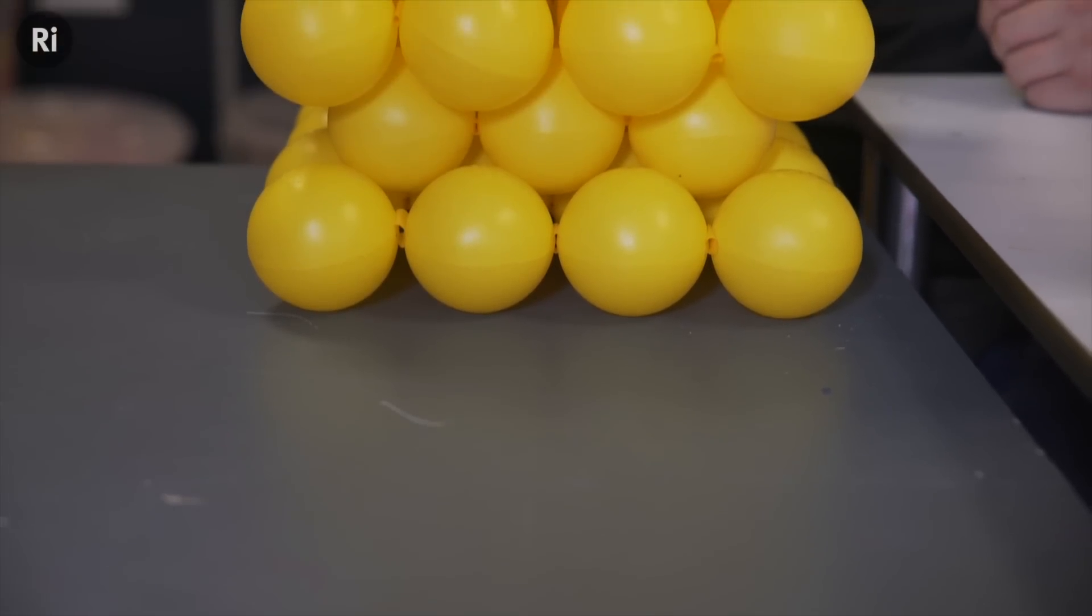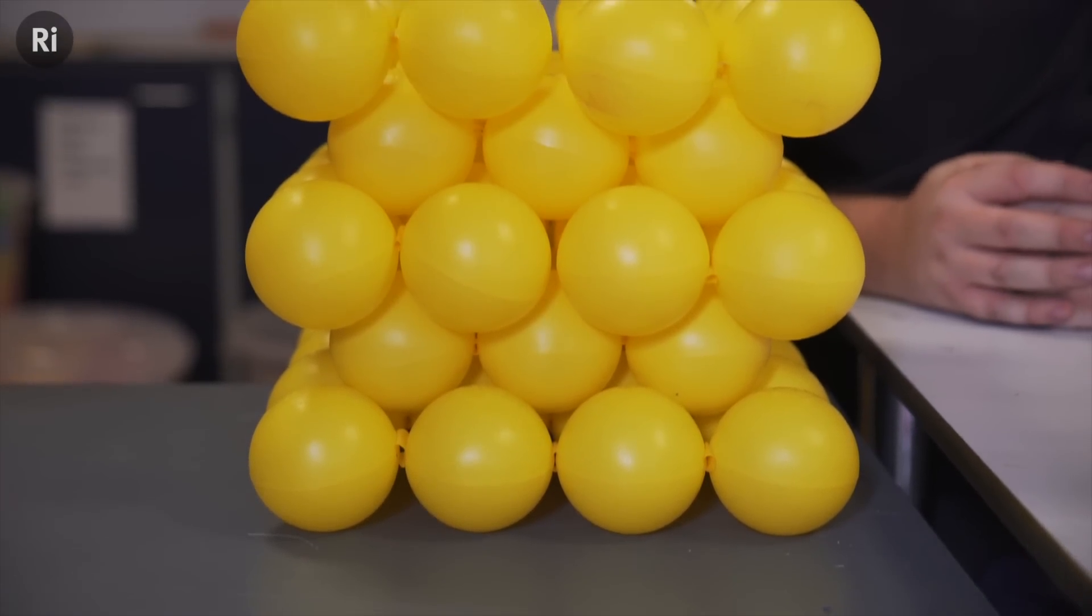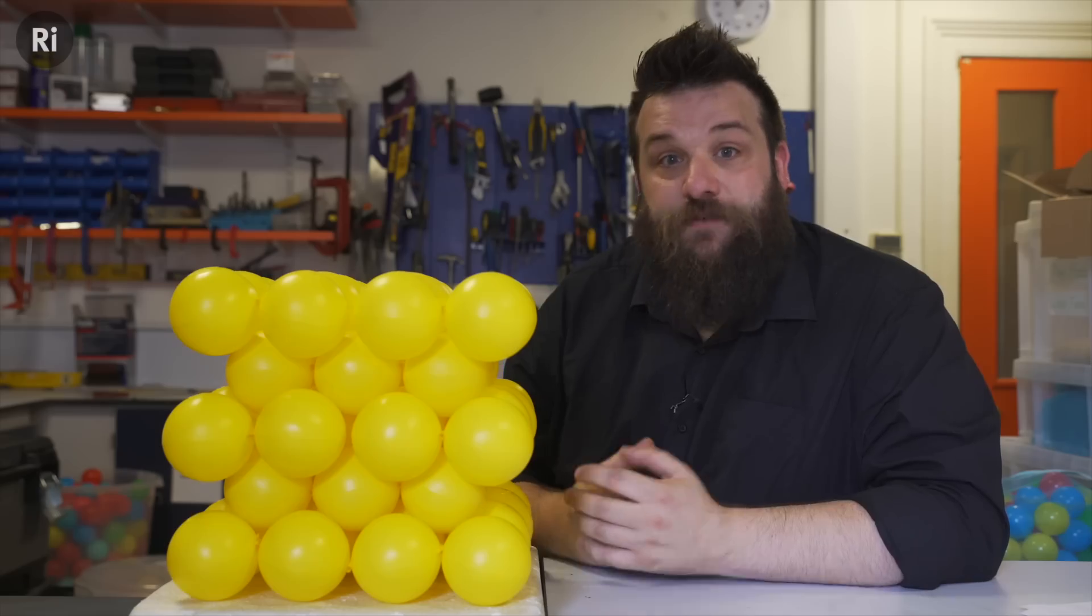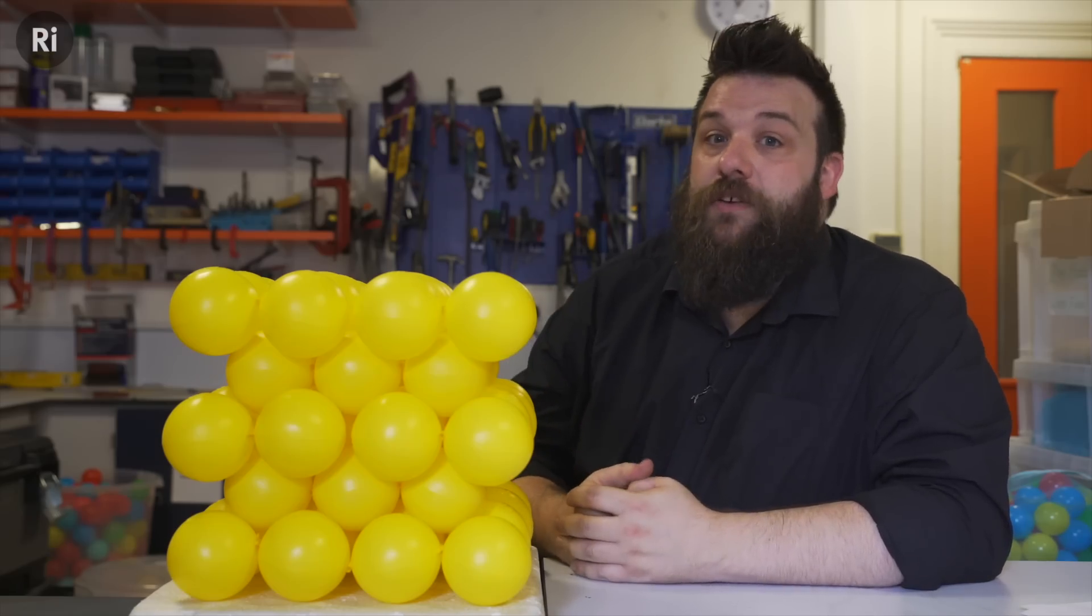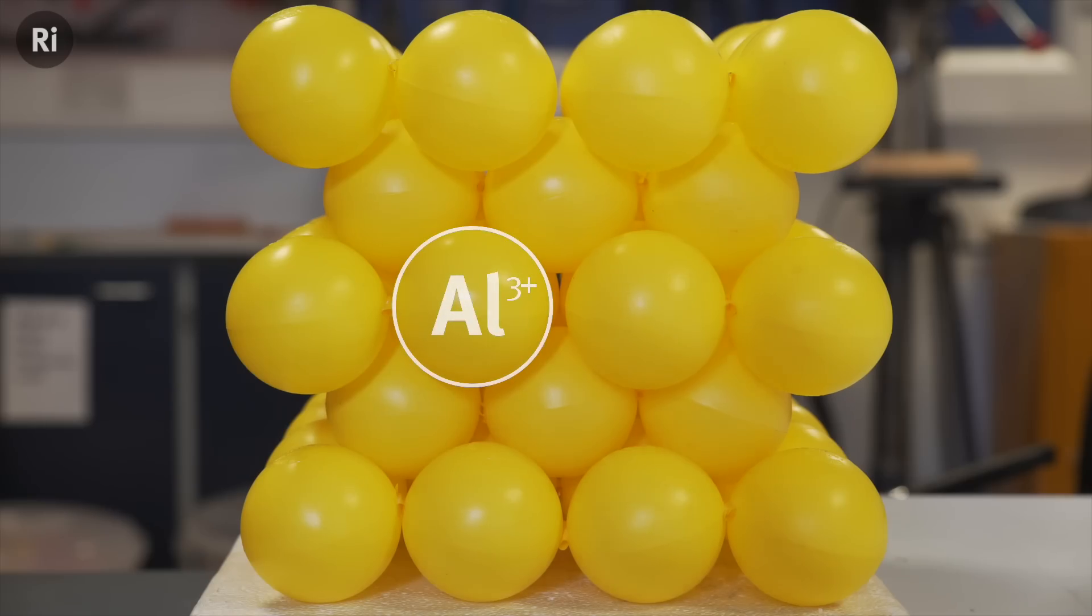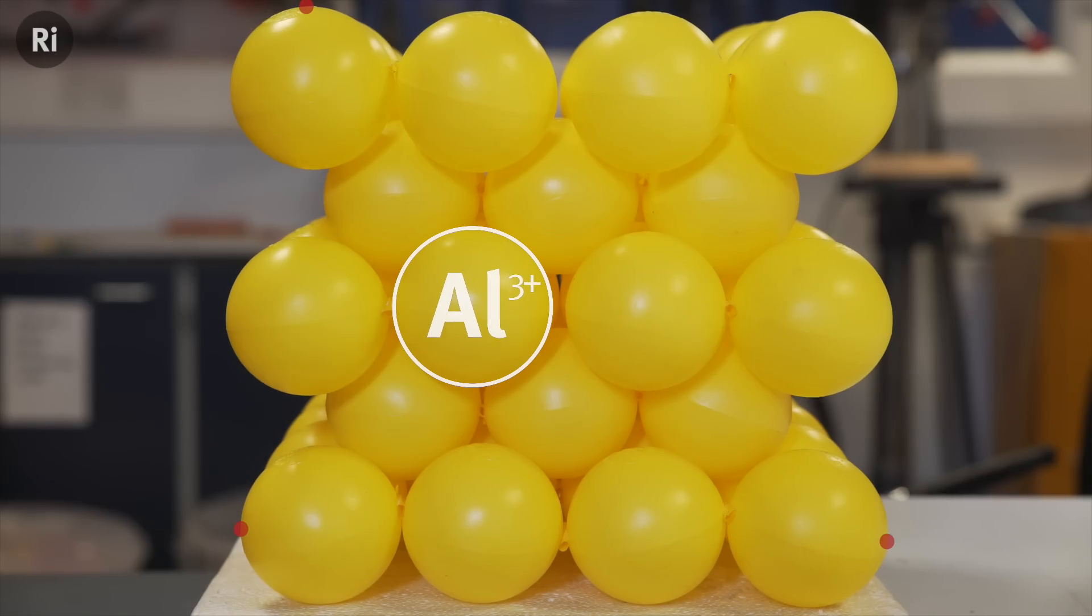As a solid, aluminium has a crystal structure. Its atoms are arranged in a rigid lattice like this. It's very ordered and the bonds between the atoms are very strong. As in all metals, the outer electrons of the aluminium atoms aren't bound to one atom, but instead can move freely within the lattice. It's the attraction between the positive aluminium ions and the free-moving negative electrons that bonds the crystal together.